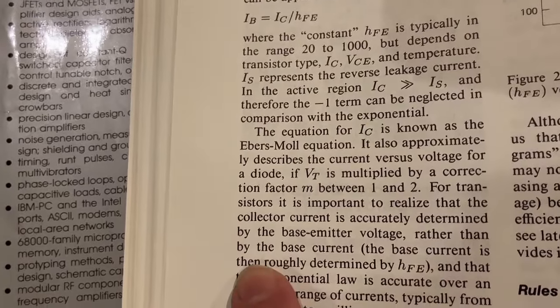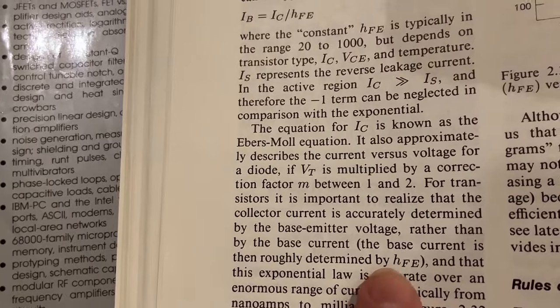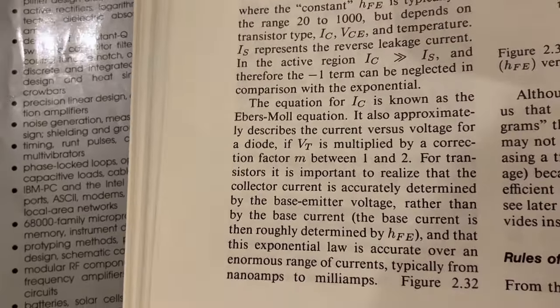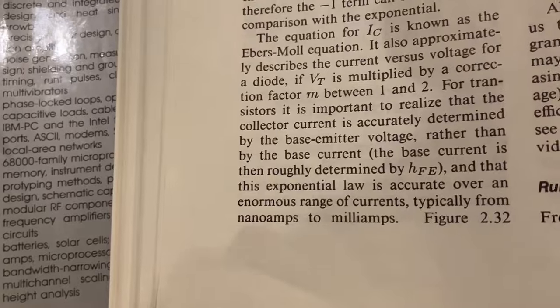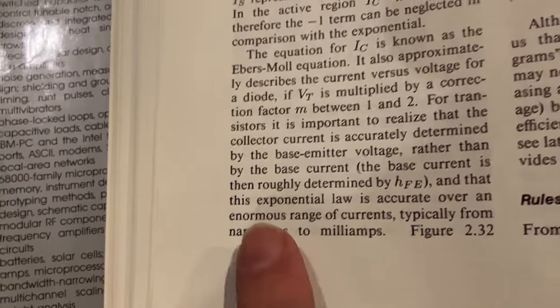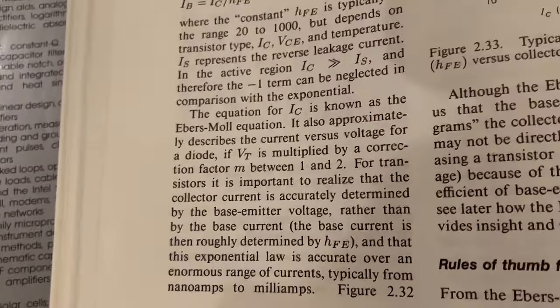The base current is then roughly determined by HFE, a.k.a. beta, and that the exponential law is accurate over an enormous range of currents, typically from nanoamps to milliamps.